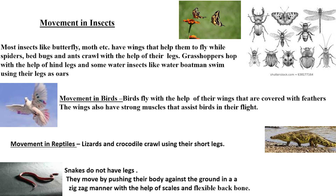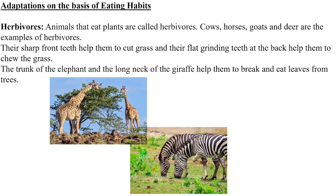Some birds like the emu, ostrich, and penguin cannot fly because they have very heavy bodies and weak wings. In reptiles, lizards and crocodiles crawl using their short legs. Snakes do not have legs, so they move by pushing their body against the ground in a zigzag manner, with the help of their scales and flexible backbone.